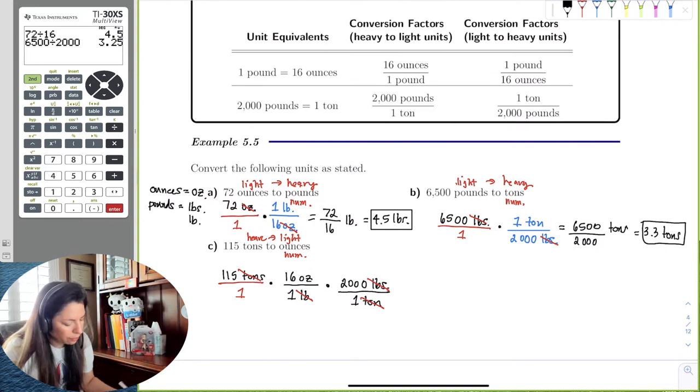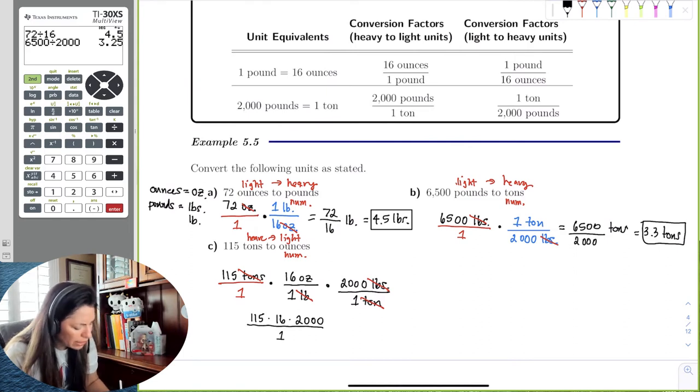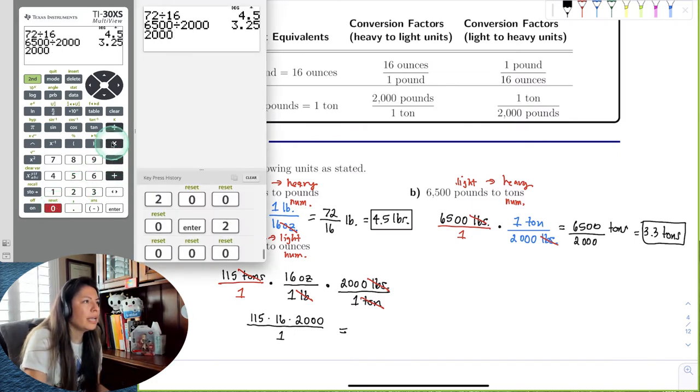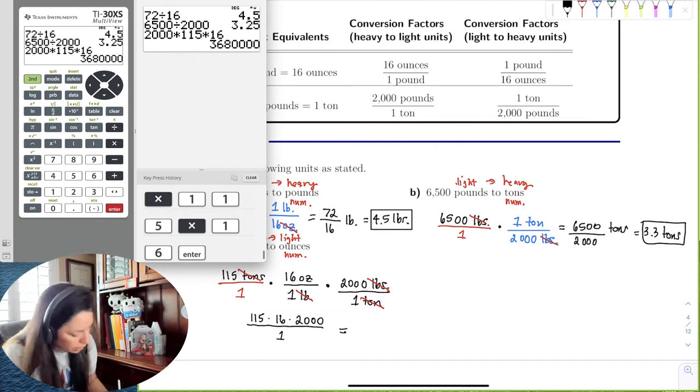Notice the only units left are the units that we needed, ounces, which is exactly what we wanted. So this is going to be 115 times 16 times 2,000, all divided by 1 times 1 times 1, which is 1. So let's go ahead and multiply. We have 2,000 times 115 times 16. And that's going to be 3,680,000 ounces.